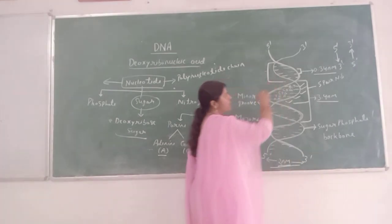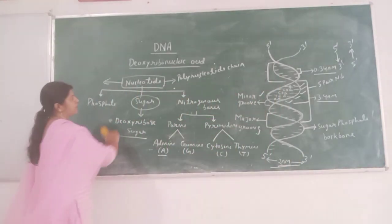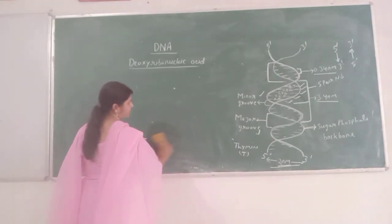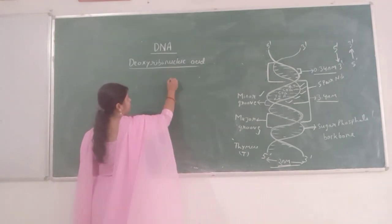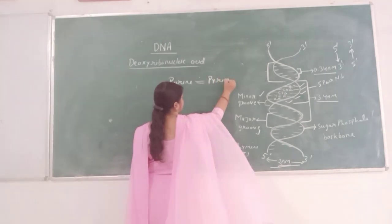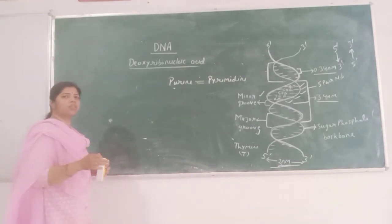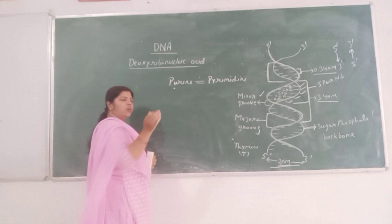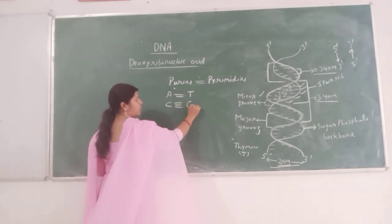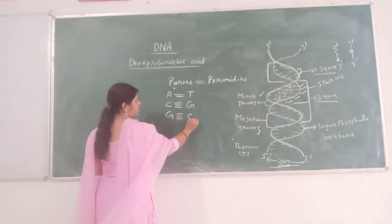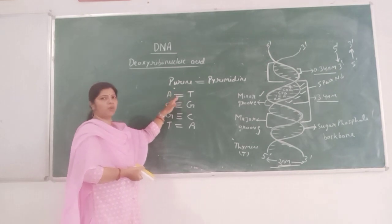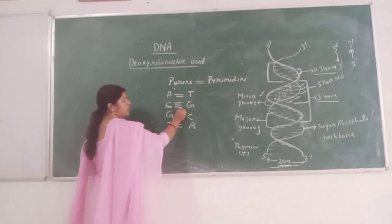DNA strands run in two directions: 5' to 3'. Purine always binds with pyrimidine. All purines are complementary to pyrimidines. Adenine is complementary to thymine and cytosine is complementary to guanine. Guanine is complementary to cytosine and thymine is complementary to adenine. Adenine always binds with thymine by a double bond, and cytosine binds with guanine by a triple bond.